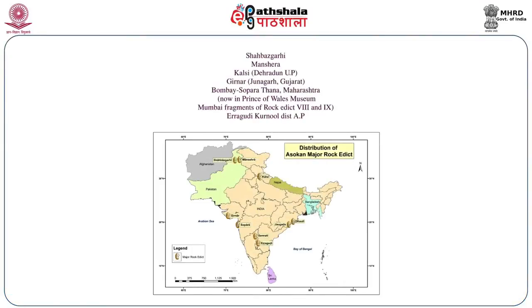Ashoka followed a policy wherein edicts were inscribed in the language and dialect which the people understood, giving us regional varieties. The distribution of Ashokan major rock edicts includes Shahbazgarhi and Mansehra in Pakistan, Kalsi in Dehradun, Girnar in Gujarat, Bombay Sopara (a fragment with only major rock edicts 8 and 9), and finally Araguri in the Kurnool district of Andhra Pradesh.